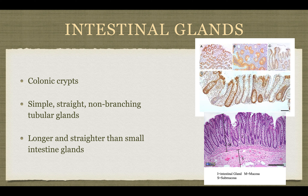Intestinal glands are actually crypts, and they are pretty straight, simple, and non-branching. They are longer and straighter than the small intestine glands.